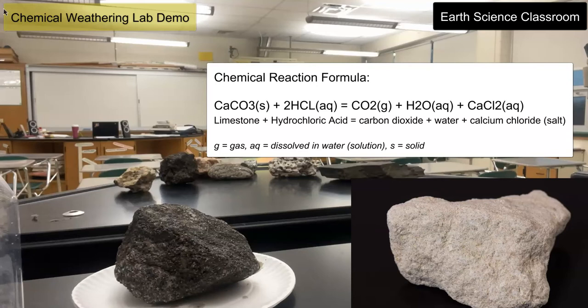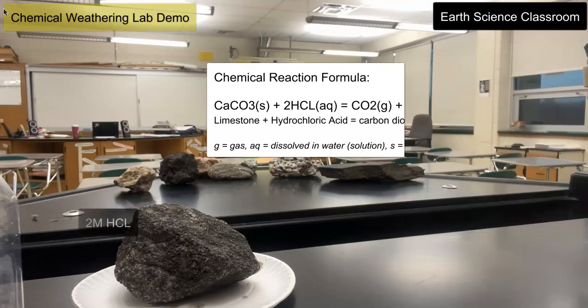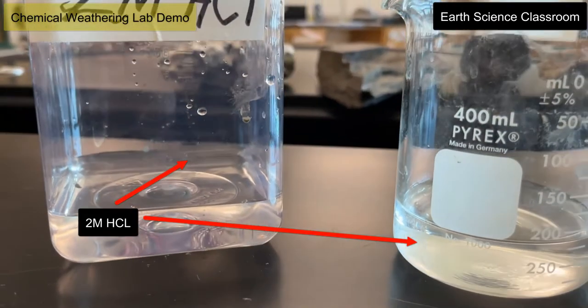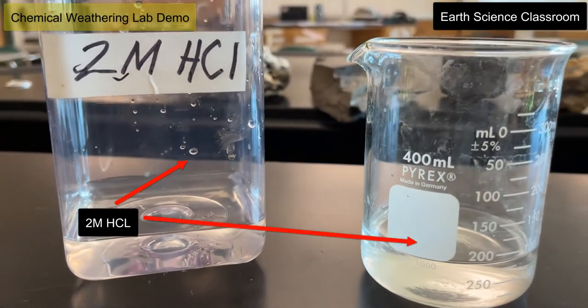This relates to reality where rainwater and meteoric water is slightly acidic, and over a long period of time this same reaction can happen, but obviously very slowly and in smaller amounts. So a quick demo and a quick close-up of what happens when you drop a limestone chip into a bath of two moles of hydrochloric acid.